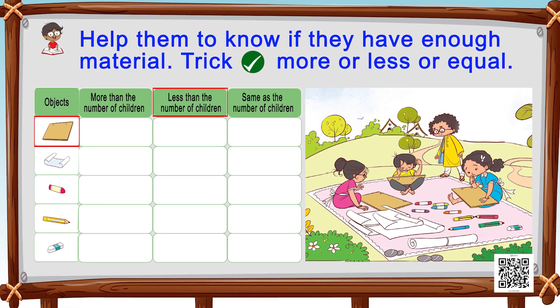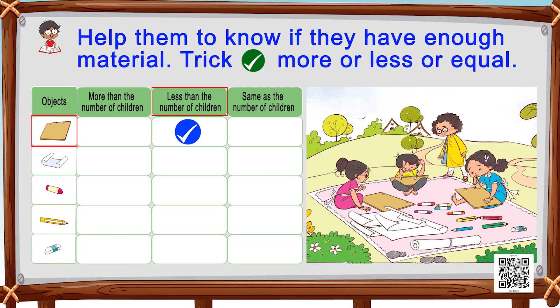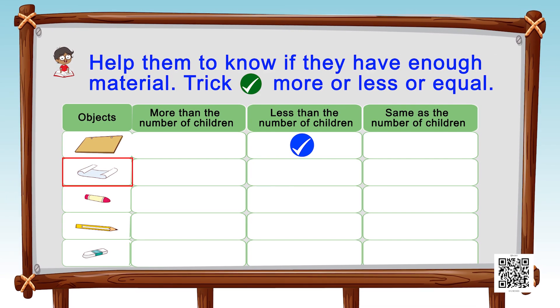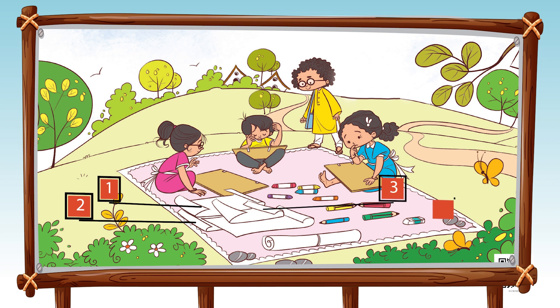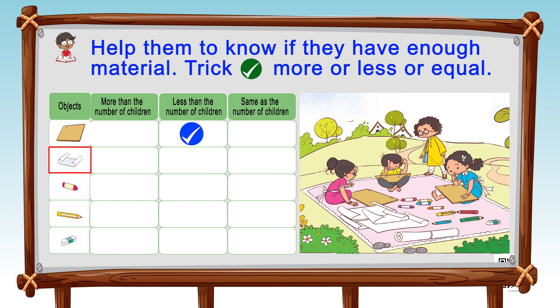Moving on to the next object — it is a chart paper. Let's count how many chart papers we have: one, two, three, four, and five. And how many children do we have? We have four children. So this is more than the number of children, and we will put a tick in the 'more than the number of children' column.